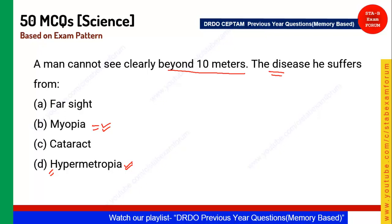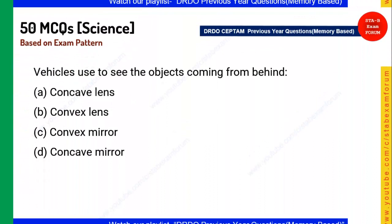Cataracts is another age-related eye disease. Farsightedness and hypermetropia are the same. Myopia is also known as nearsightedness — the person cannot see beyond a certain distance. The correct answer for this question is option B.